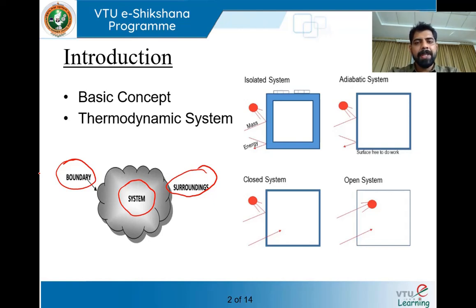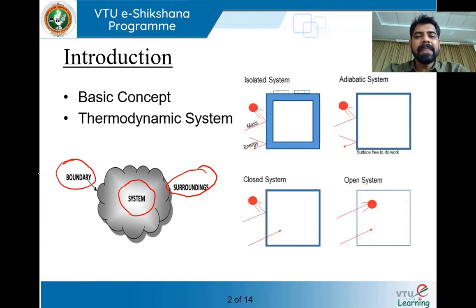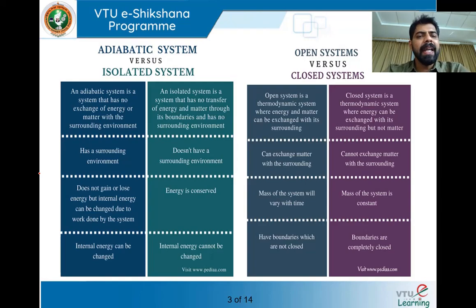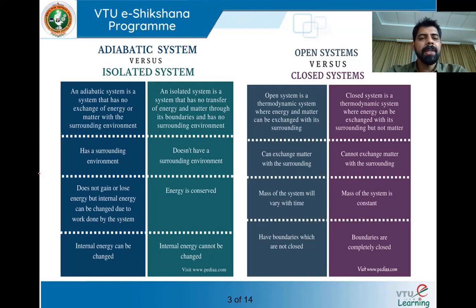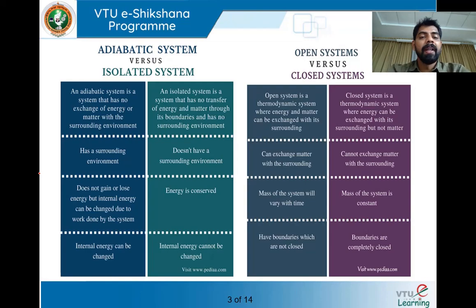When it comes to thermodynamic systems, there are basically four types: isolated system, adiabatic system, open system, and closed system. An adiabatic system is one which has no transfer of energy or matter with the surrounding — whatever happens, happens within the system only. Exchange of heat, work, or energy all take place within the system. Nothing goes out of the system and nothing comes into the system. That is what we call an adiabatic system.